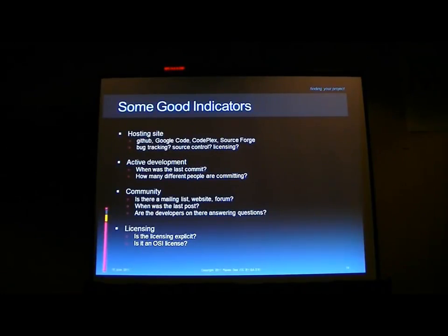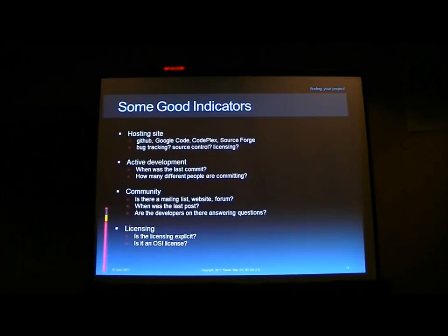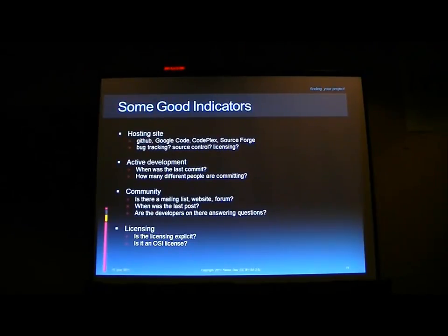It's as simple as: when was the last post or commit? So if you download a project, it seems that it's everything you need, and it's at version 6.3.4, but the last commit was three years ago. It's really safe to check that.